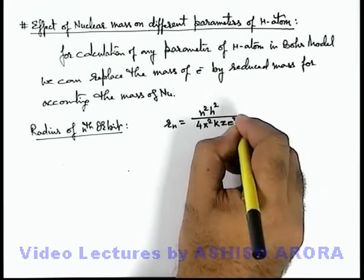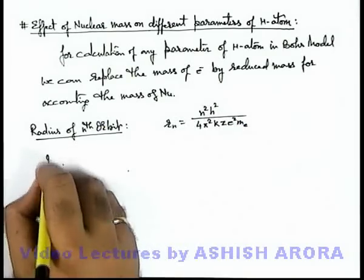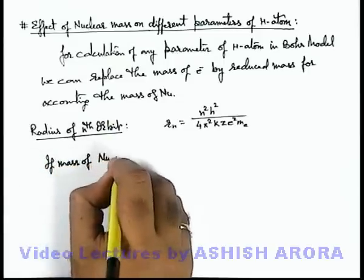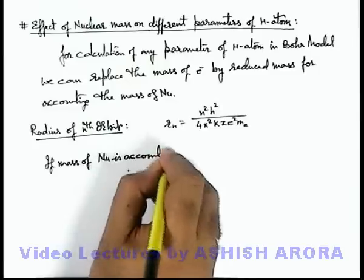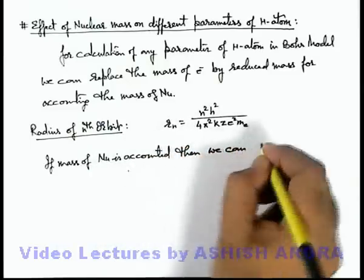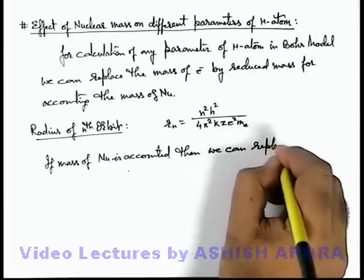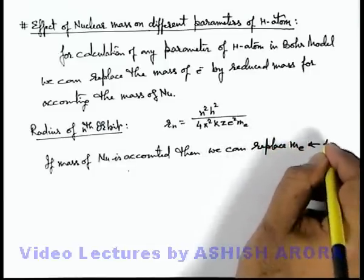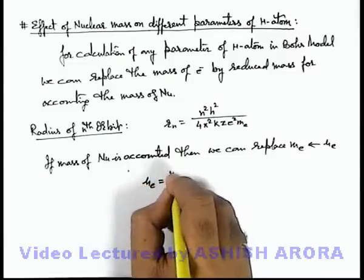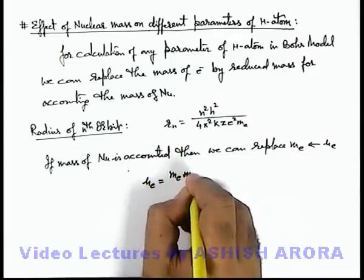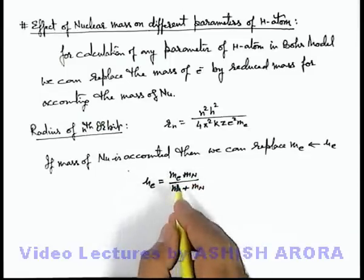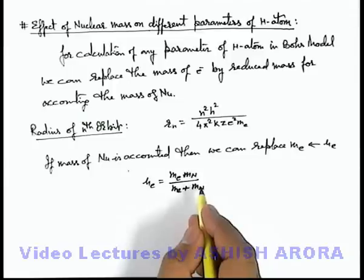Now we can simply state if mass of nucleus is accounted, then we can replace me by the reduced mass of electron which is given as μe = me·mn/(me + mn), where me is the mass of electron and mn is the mass of nucleus.